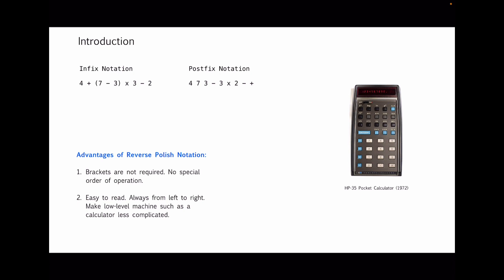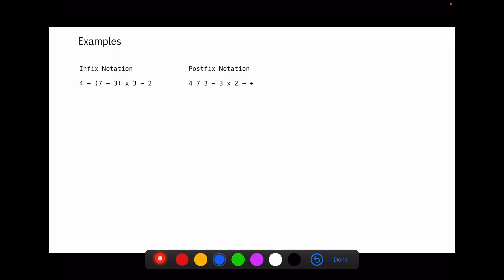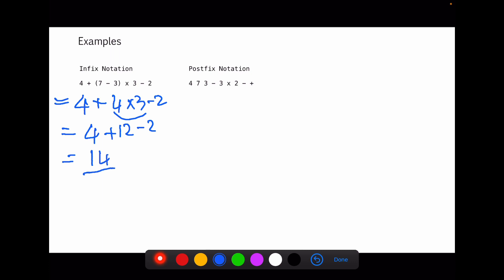Now that we understand why it exists, let's look at the calculation. Starting with infix notation, which is straightforward: 4 plus, take care of the parentheses first — 7 minus 3 equals 4 — multiplied by 3, minus 2. Then handle the multiplication: 4 plus 12 minus 2, and we arrive at 14 as the result.